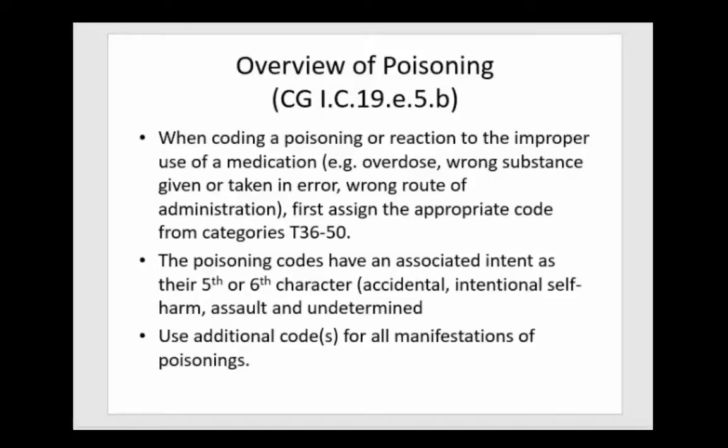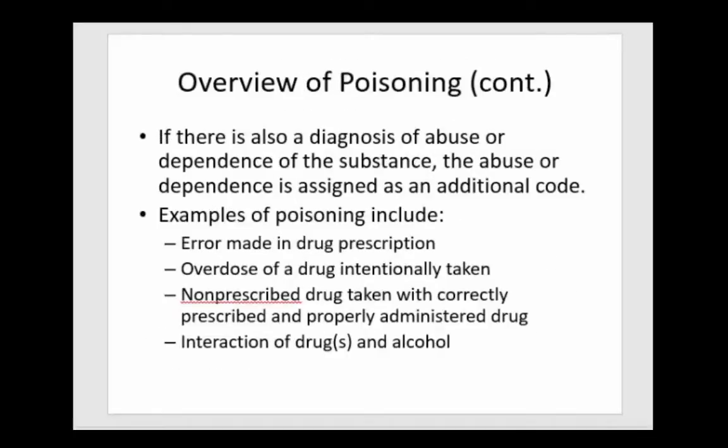Use additional codes for all manifestations of poisonings. If there is also a diagnosis of abuse or dependence of the substance, the abuse or dependence is assigned as an additional code. Examples of poisoning include an error made in a drug prescription, an overdose of a drug intentionally taken, a non-prescribed drug taken with a correctly prescribed and properly administered drug, and an interaction between a drug and alcohol.